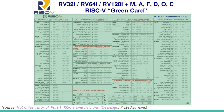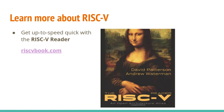To give you a sense of the landscape, the base ISA and all the standard extensions fit on one card. Compare that to x86 or ARMv8 and it's much smaller. If you want to get more in-depth on the instruction set, I recommend the RISC-V Reader — it's a pretty short book, about 100 pages, and it gets you up to speed really quickly. It's also available in several different languages.